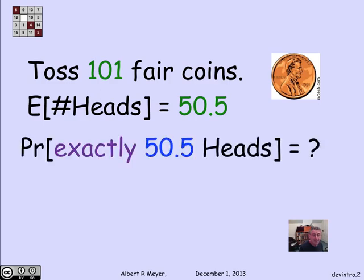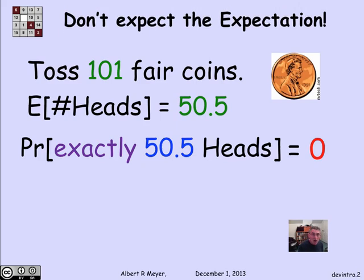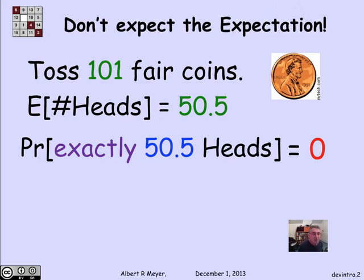Now, I'm never going to get exactly 50 and a half heads. The probability in 101 flips of getting 50 and a half heads is 0, because there's no way to flip half a head. So you don't expect the expectation in that sense. No given measurement, no given experiment, is going to yield the expectation. The expectation is this thing that we expect to come out on the average.